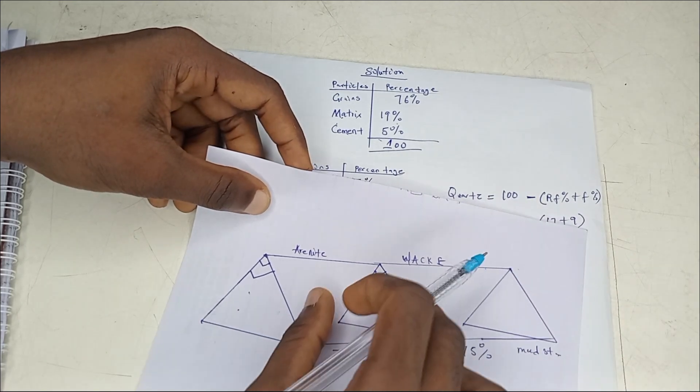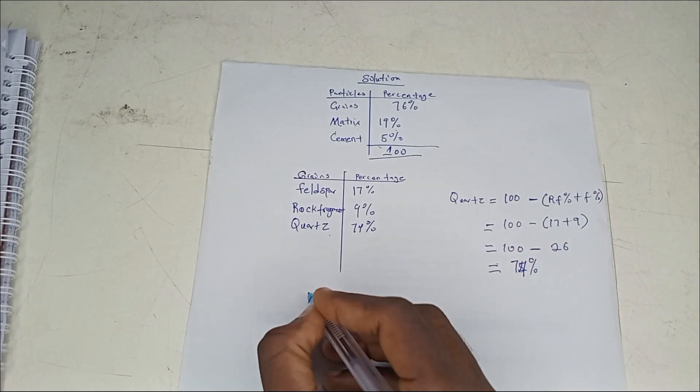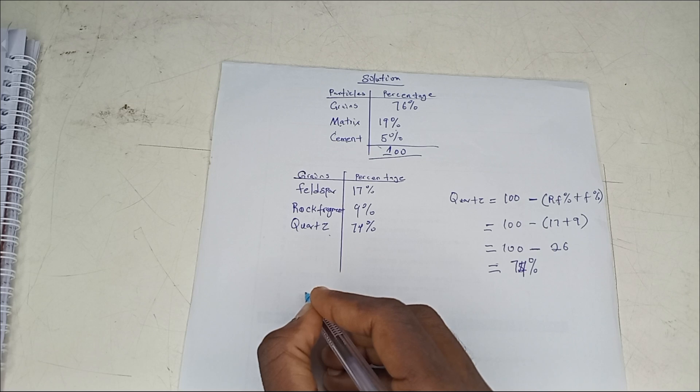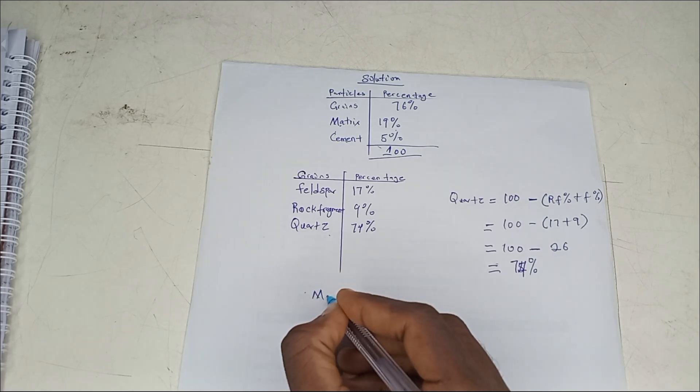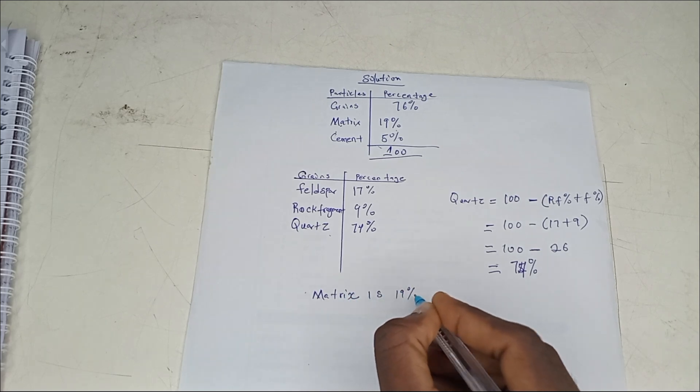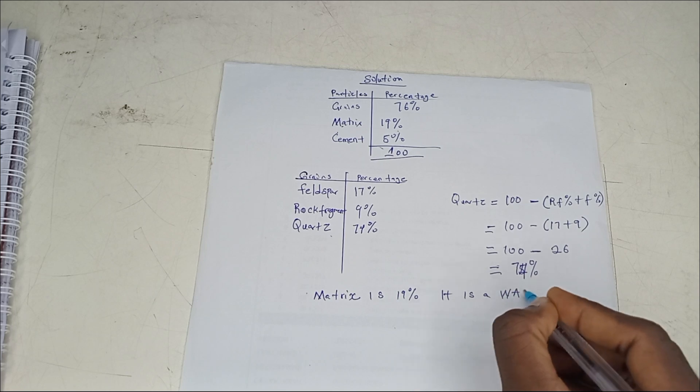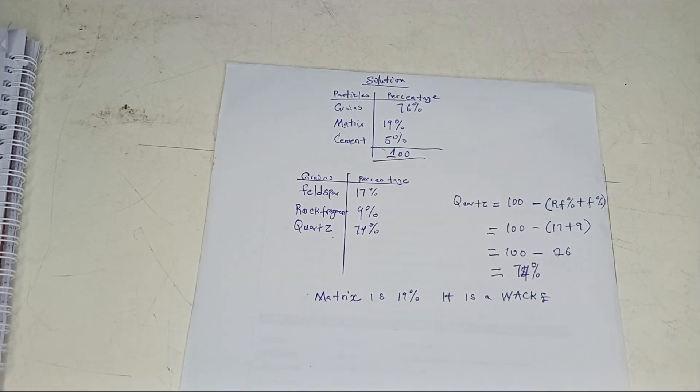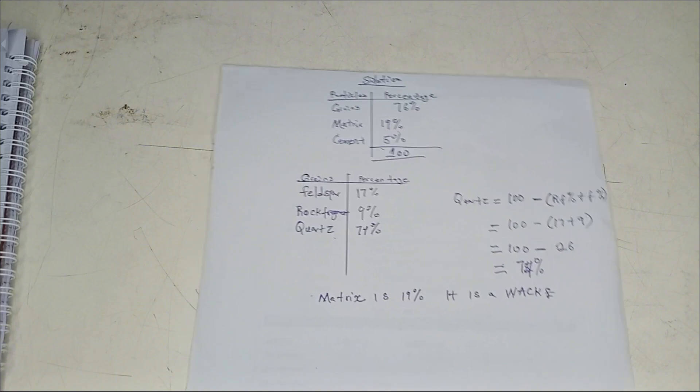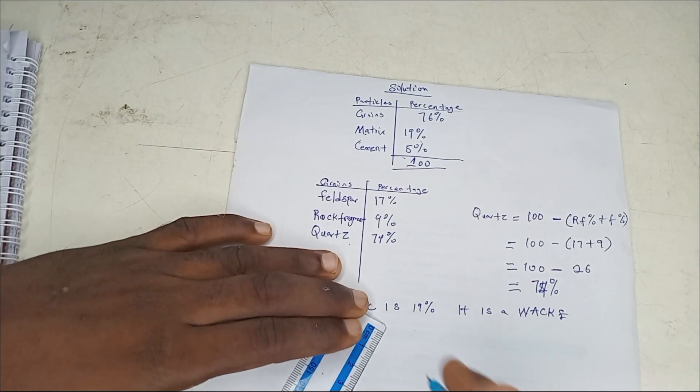Since the matrix is 19%, it is a wacke or graywacke. I like drawing an isosceles triangle, making sure both sides are equal. I'm using 5 centimeters because it's very easy to divide into 10.